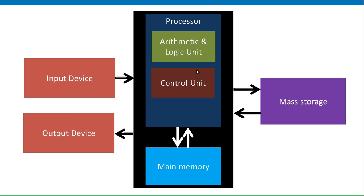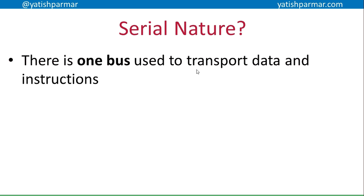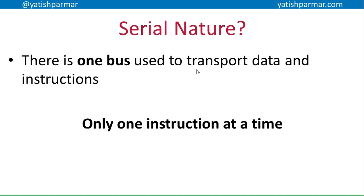Within the processor — this was the key part — you have an arithmetic and logic unit for actually carrying out the instructions, and a single control unit for figuring out what to do with instructions, and a number of memory registers for performing those tasks. So what we're talking about here is the serial nature, because we have a single control unit.